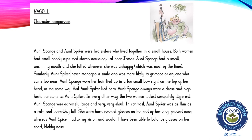Aunt Sponge always wore a dress and high heels, the same as Aunt Spiker. In every other way, the two women looked completely different. Aunt Sponge was extremely large and very, very short. In contrast, Aunt Spiker was as thin as a rake and incredibly tall. She wore horn-rimmed glasses on the end of her long pointed nose, whereas Aunt Sponge had X-ray vision and wouldn't have been able to balance her glasses on her short blobby nose. Actually, that last part should have been Aunt Sponge — she's the one with the short blobby nose.